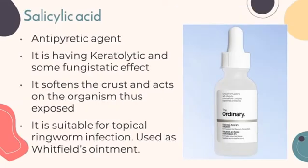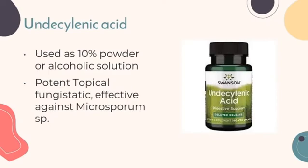Salicylic acid is an antipyretic agent with keratolytic and some fungistatic effect. It softens the crust and acts on the organism thus exposed, and is suitable for typical ringworm infection. Undecylenic acid is used as a 10% powder or alcoholic solution. It is a potent topical fungistatic effective against Microsporum species, but at higher concentrations it is an irritant, hence used in combination with zinc or copper salts to minimize irritation.